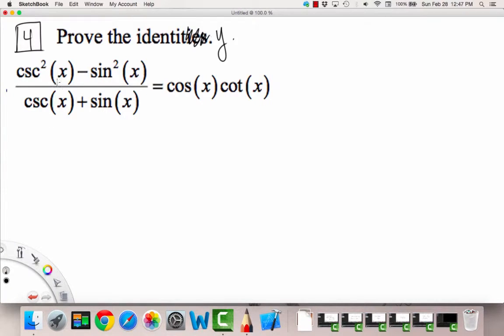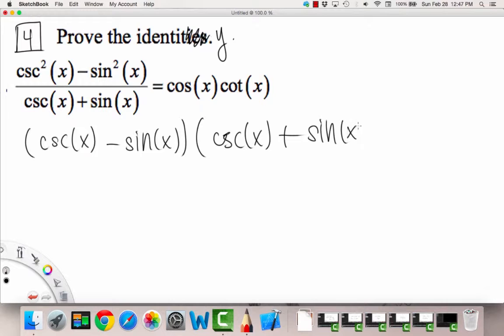We're just going to kind of treat cosecant and sine, in this case, as kind of just like variables. They're just things that we're going to move around. So the top can actually be factored into, because we have a difference of two squares. So this is like saying cosecant x minus sine x times cosecant x plus sine x. And you can always check this by foiling out again, and you'll get the same thing.